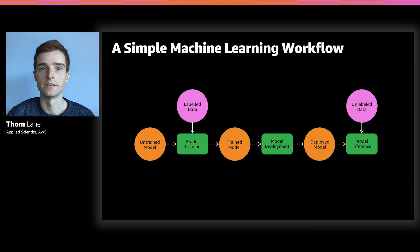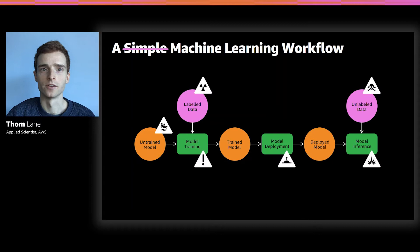This is what a typical machine learning workflow might look like. First of all, we have to define a model, whether that's XGBoost or a neural network. We then provide labeled data to train the model. When we have a trained model, we move this to deployment, and then we can make predictions on unlabeled data. But in practice, this is not so simple. There are many mistakes and hurdles that we have to overcome.